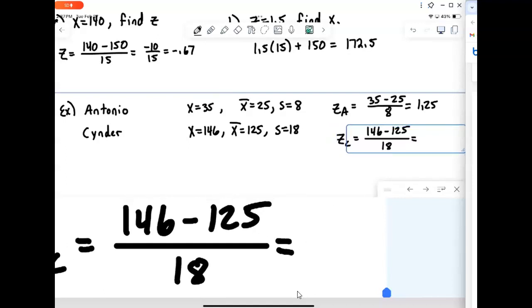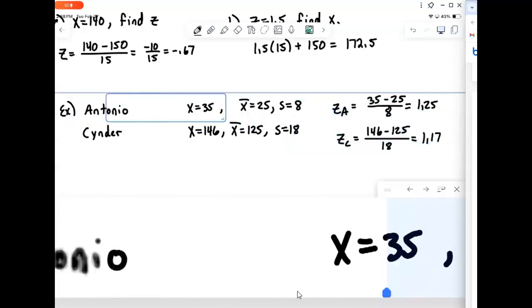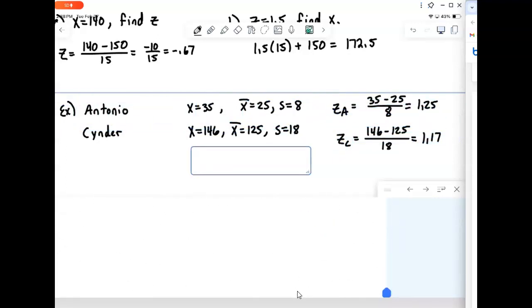And now Cinder scored 146 minus 125, divided by 18. And that comes out to be 1.17. So it turns out, relative to their set of data, Antonio did better than Cinder. So that's how we can compare where they're at in two completely different sets of data.